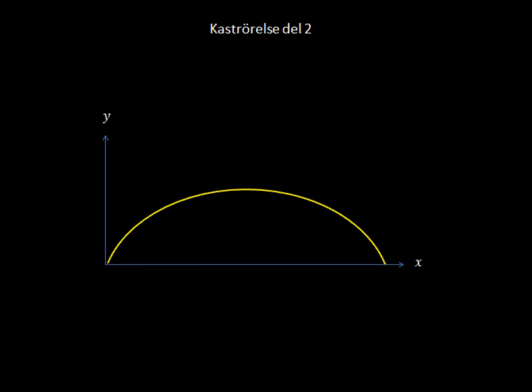So here is the problem. It is Jamin throws a ball. It leaves his hand at 10 meters per second. The angle at which it leaves his hand relative to the ground is 35 degrees. And the question is, how far will the ball travel?